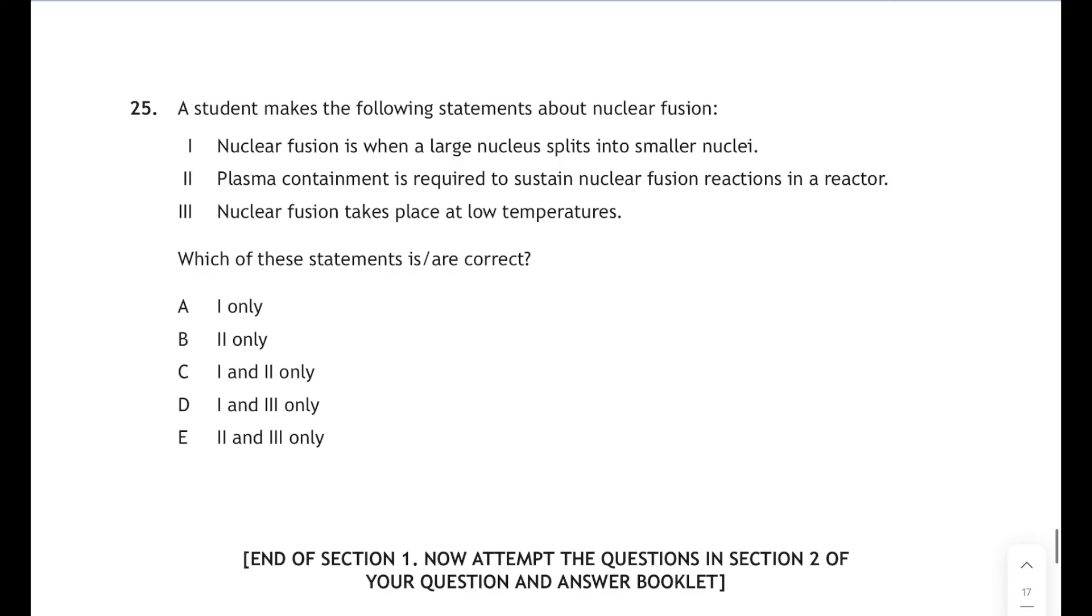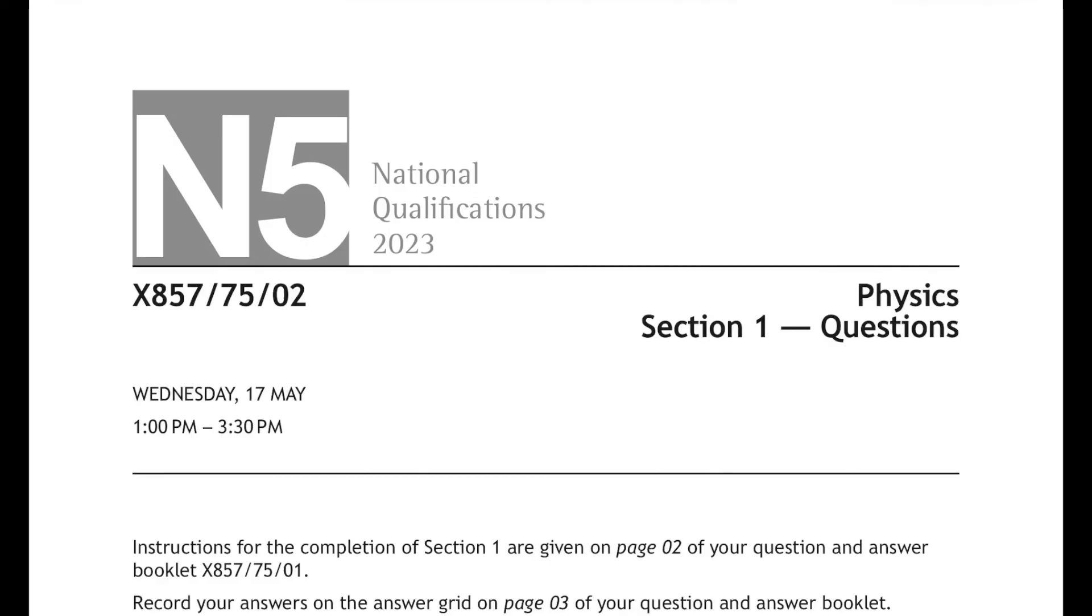Okay, last one, question 25: a student makes the following statements about nuclear fusion, and we have to state which of these statements is or are correct. Now it's fusion, that's when two small nuclei like hydrogen nuclei are fused or joined together. So statement one: nuclear fusion is when a large nucleus splits into smaller nuclei—nope, that would be nuclear fission. Statement two: plasma containment is required to sustain nuclear fusion reactions in a reactor—yes, that's true. And statement three: nuclear fusion takes place at low temperatures—no it doesn't, takes place at millions of degrees. So it's only statement two that's correct, and that corresponds to 25B.